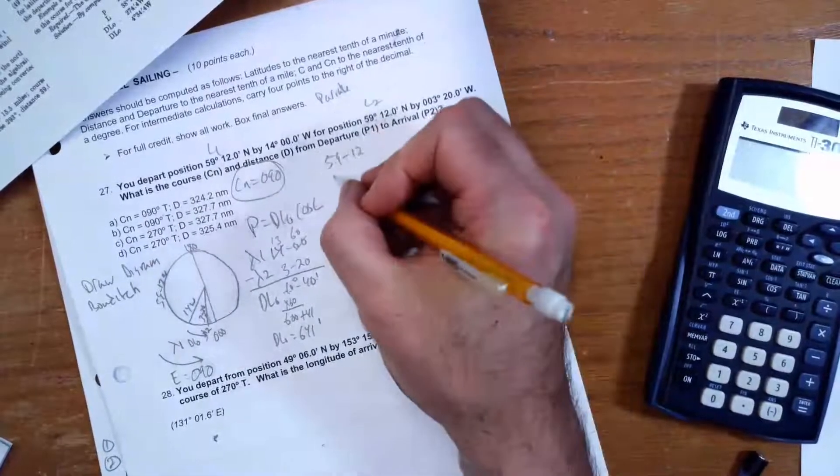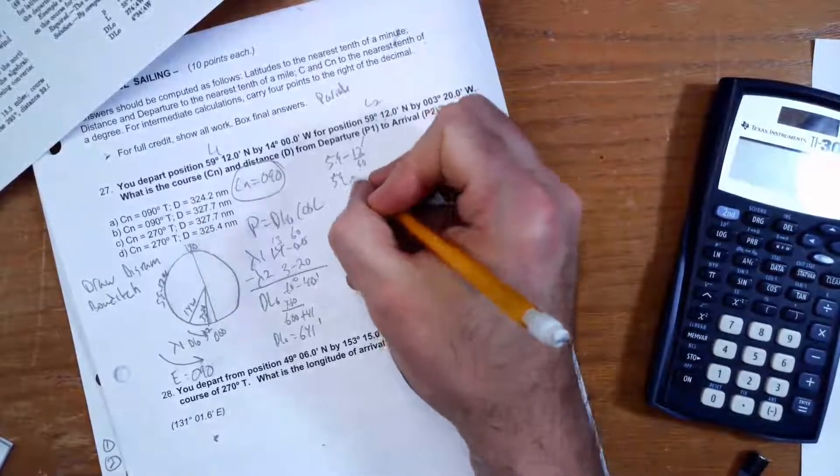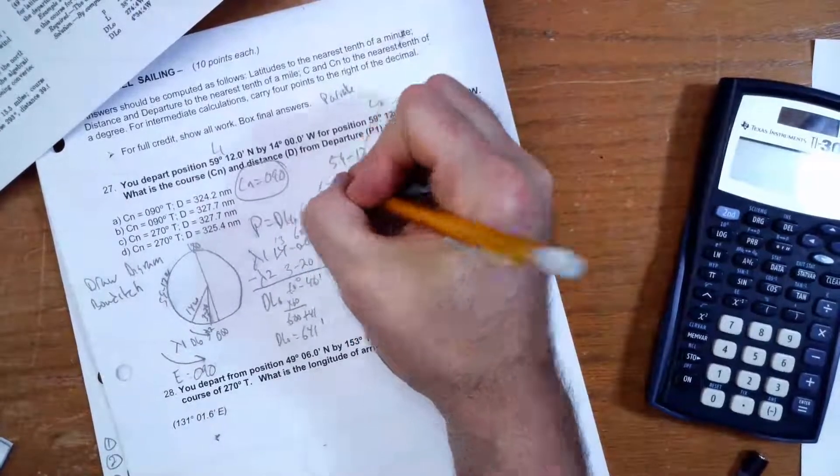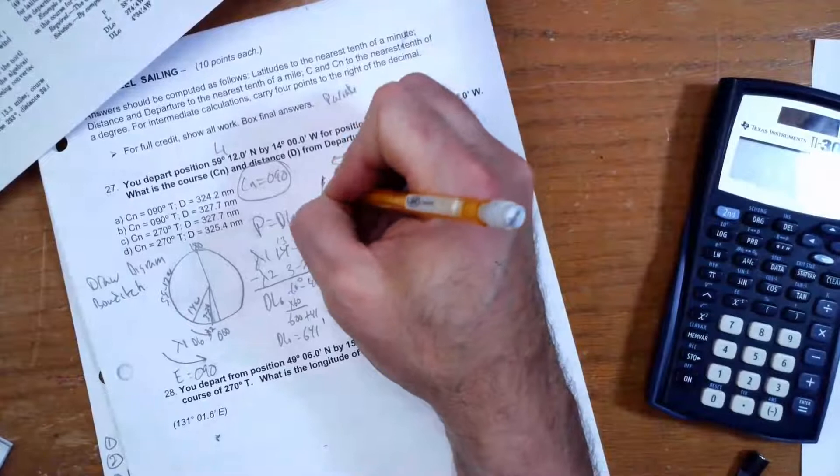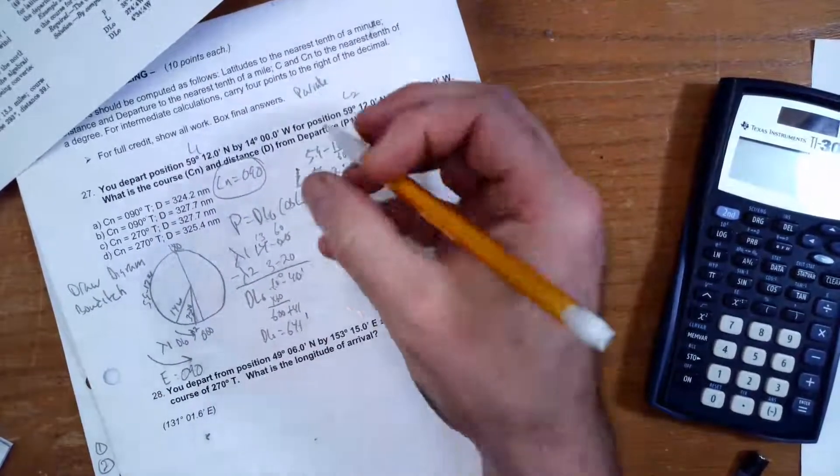Well, that's already degrees, so that's going to be 59°. This is minutes. If I divide the 12 by 60, I get 0.2, so that's 59.2°. So my latitude is 59.2 degrees. So now I'm going to substitute both of those in.